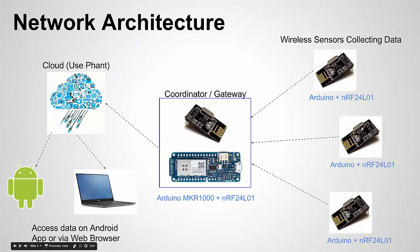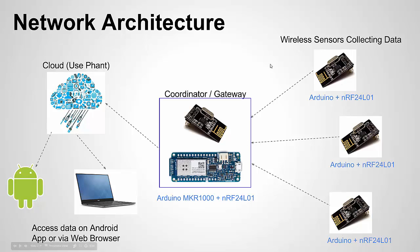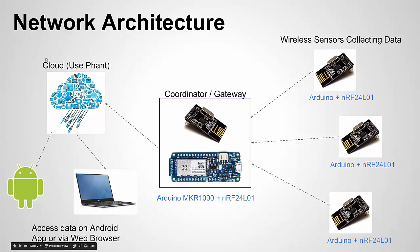Here's an overview of the network architecture — I showed this in both parts one and two so I'm not going to talk too much about it. I will mention how great the open source community is, because doing something like this five or ten years ago would have taken a lot of development effort. Because of open source pieces like the NRF24L01 library for Arduino, the Arduino platform itself, the Phant cloud from SparkFun which is open source, and MIT's App Inventor tool for creating Android apps — all open source — it allows us to build a project like this in a fairly short amount of time.